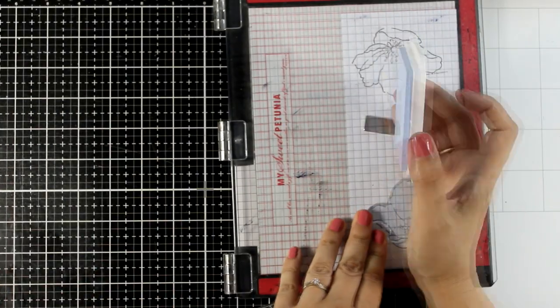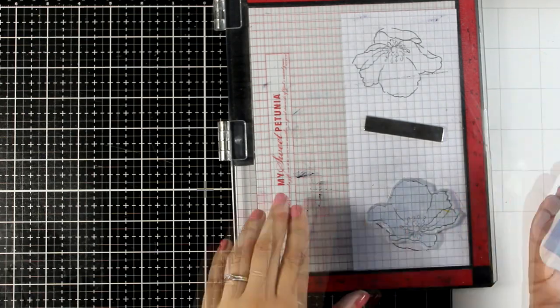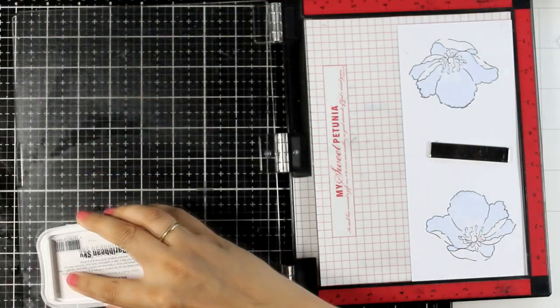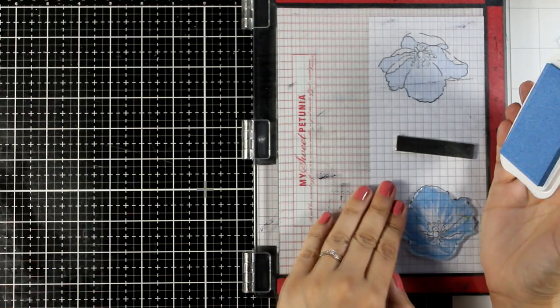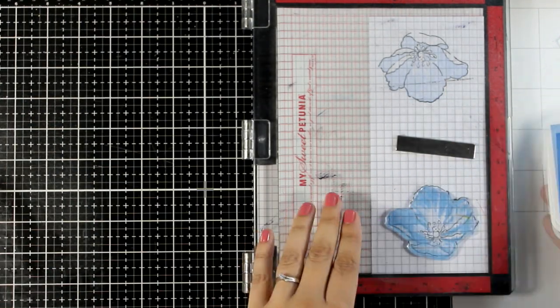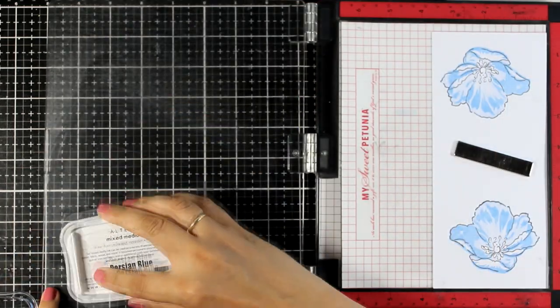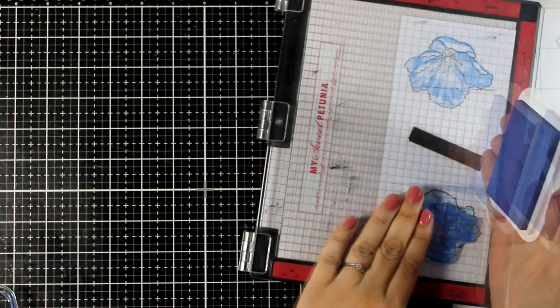So I started by stamping the outline with jet black ink, again by Altenew, and now I am going to use all four shades of blue starting from lighter all the way to the darker shade. Just like always, you will find a full list of supplies that I used to make this card down below in the description area as well as on my blog.